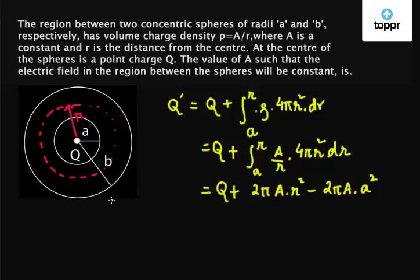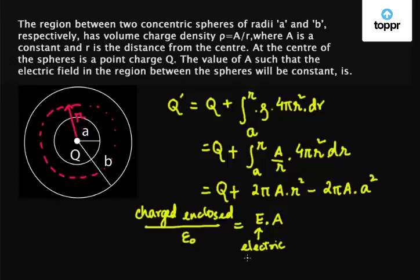Now from Gauss law, we know that the charge enclosed inside the region is given by charge enclosed upon epsilon naught equals E dot A, where A is the surface area of the region and E is the electric field present.